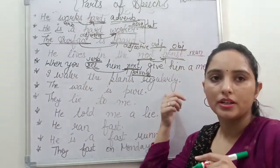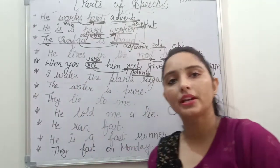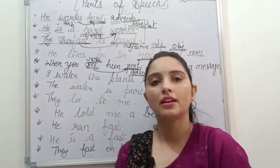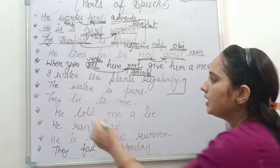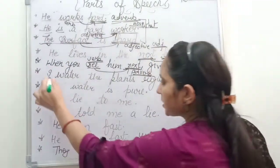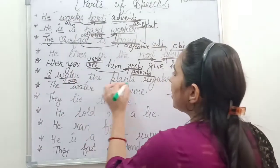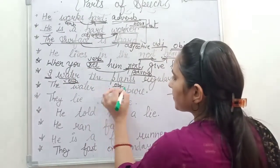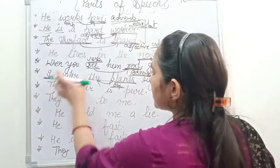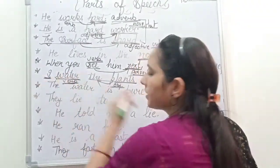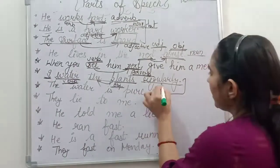Another example: 'I water the plants regularly.' Here 'I' is the pronoun subject. The verb is 'water.' The object is 'the plants,' which is a noun with a determiner. 'Regularly' tells us how frequently the action is done — how frequently? Regularly. So 'regularly' is the adverb modifying the verb.